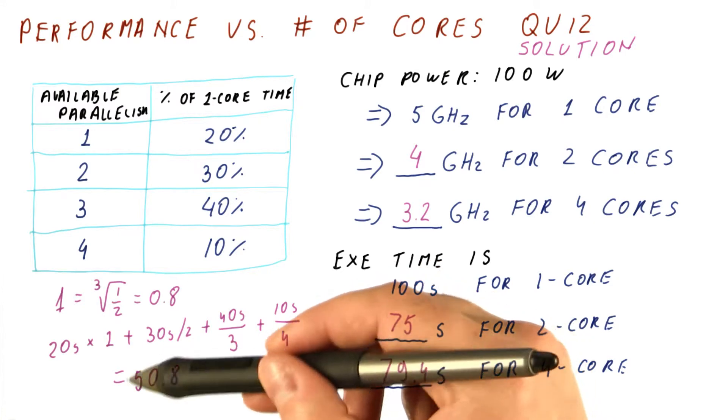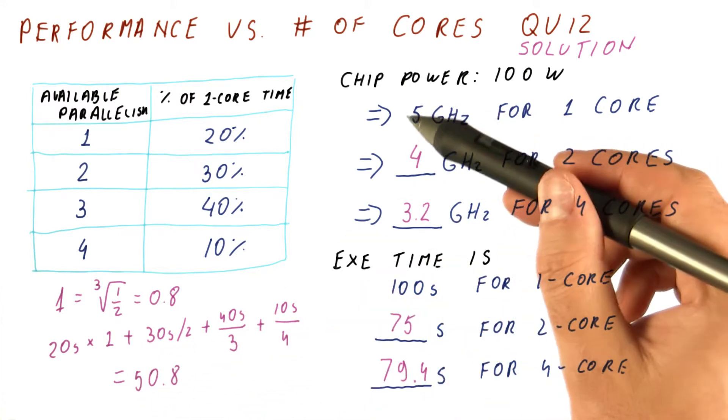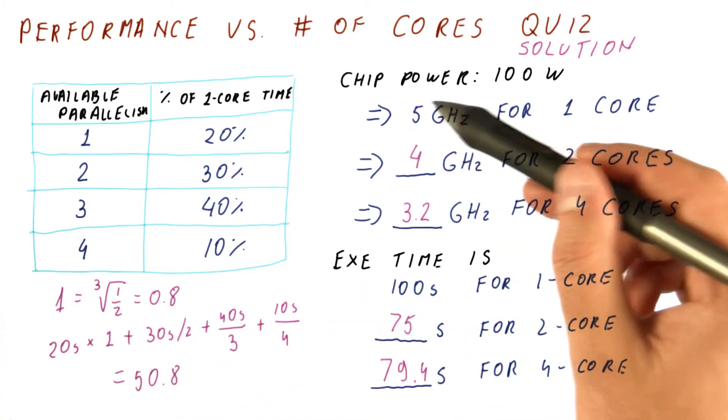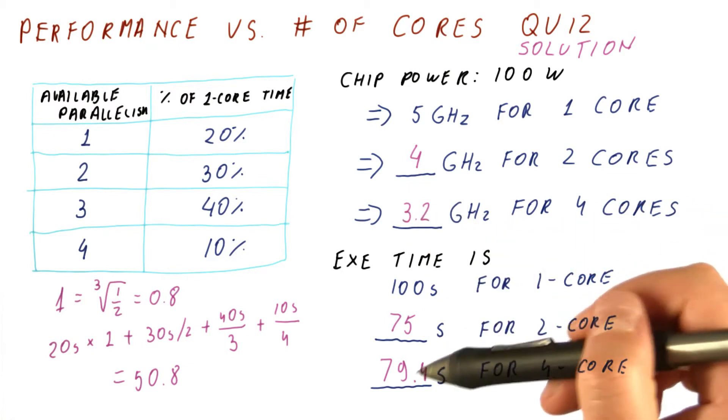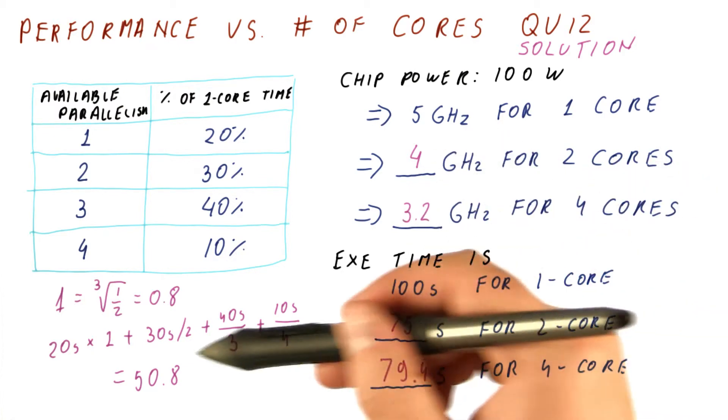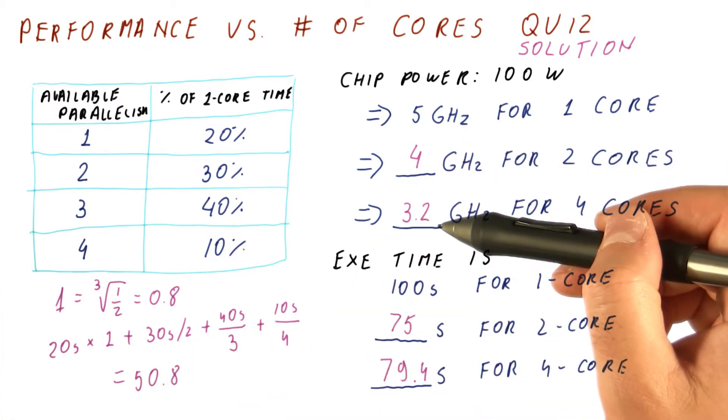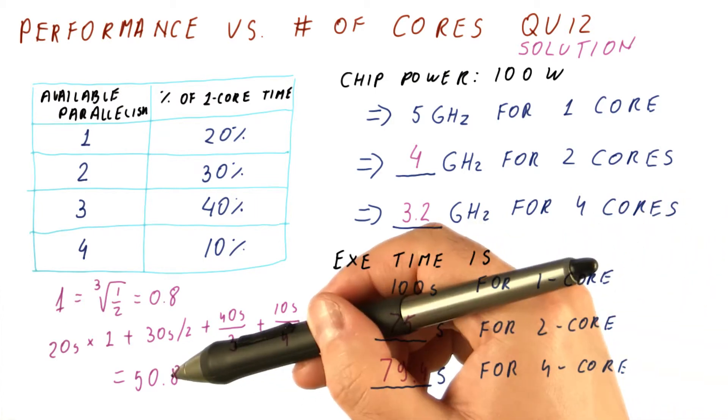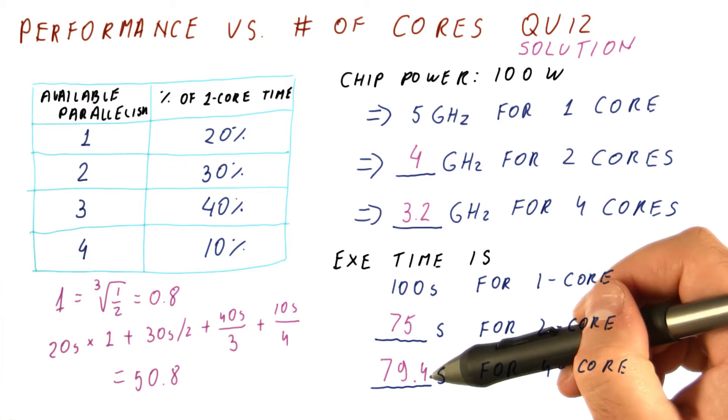So once we get the 50.8 seconds, that's without the change in frequency, and we get from 5 to 3.2. So when we compute the speedup relative to this because of a lower frequency, which is actually a slowdown, and we multiply that with this, we get 79.4.